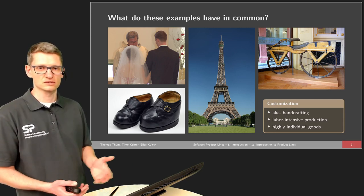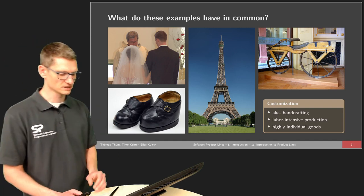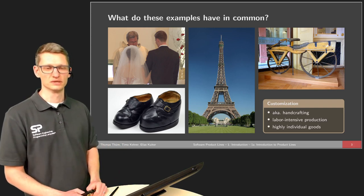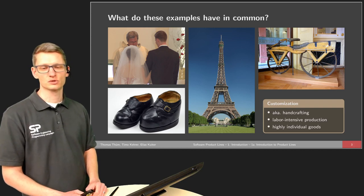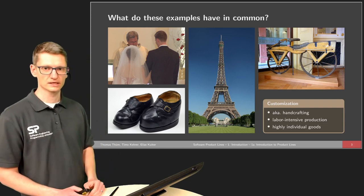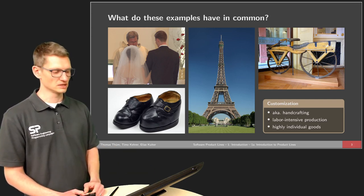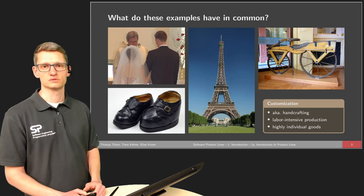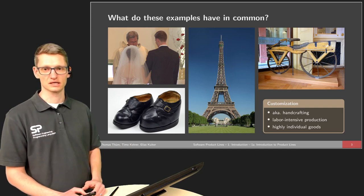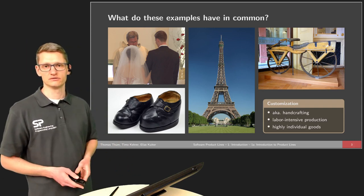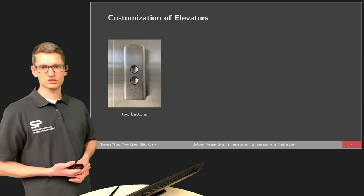These shoes are medical shoes designed for a particular person — customized for one person and not a mass product you can buy in a store. The Eiffel Tower is unique; there's only the original. When it comes to clothes, there's typically only one point in time when people have customization, and that's for a wedding dress customized to fit perfectly. And there's an early bicycle that was built as just one piece, customized for a particular person — people of a different size cannot ride it. These examples share labor-intensive production and highly individual goals.